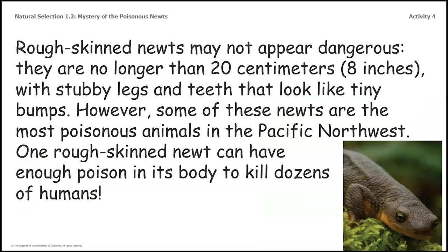Rough-skinned newts may not appear dangerous. They are no longer than 20 centimeters — 8 inches — with stubby legs and teeth that look like tiny bumps. However, some of these newts are the most poisonous animals in the Pacific Northwest. One rough-skinned newt can have enough poison in its body to kill dozens of humans. That's crazy — an eight-inch-long newt! If I laid a newt across the short edge of a regular 8.5 by 11 piece of paper, it wouldn't even be that big, and it can kill dozens of people.